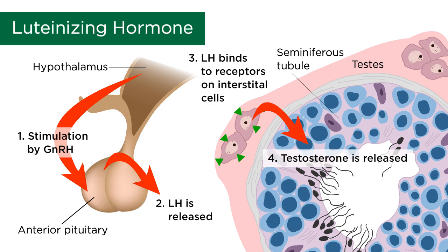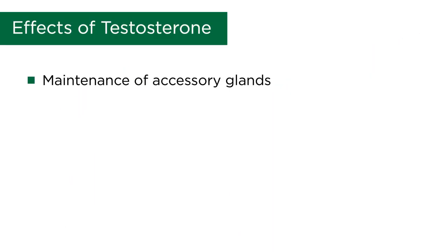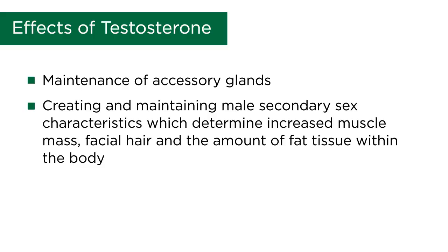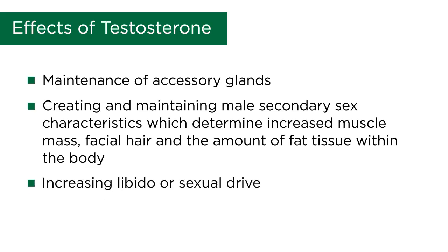Once testosterone is released into the circulation, it has a few main effects, which include the maintenance of accessory glands and organs, creating and maintaining male secondary sex characteristics — which determine increased muscle mass, facial hair, and the amount of fat tissue within the body — increasing libido or sexual drive, and finally, stimulation of bone growth.